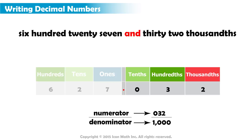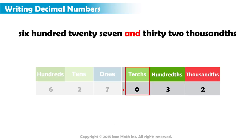As you can see, we have a zero in the tenths place, then three in the hundredths place, and finally two in the thousandths place. This gives us the correct value, which is 32 thousandths.